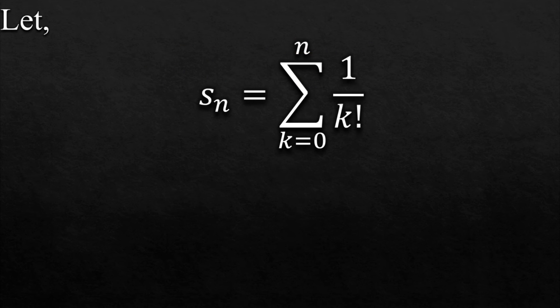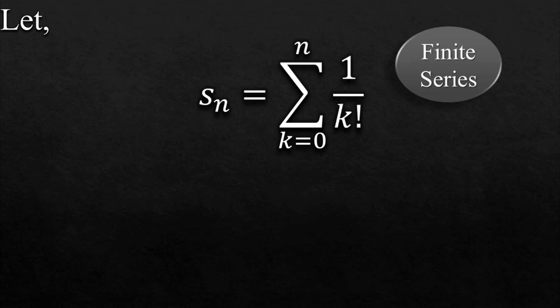Now for the proof, let Sn be the series of 1/k! where k ranges from 0 to n and not infinity. This means that it is a finite series. And as all finite series are less than infinite series, Sn is less than or equal to e or Euler number. Sn gets equal to e when n equals infinity.